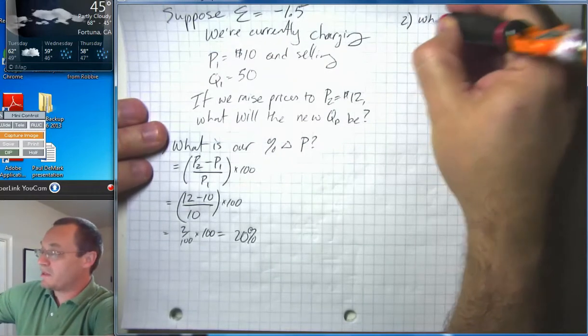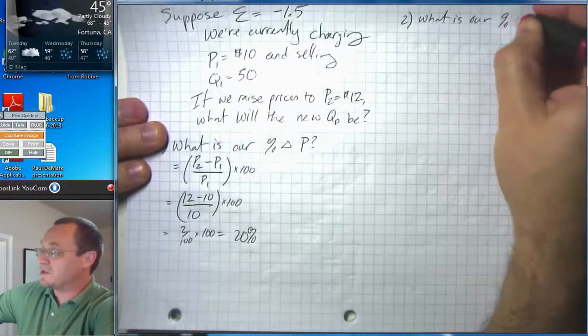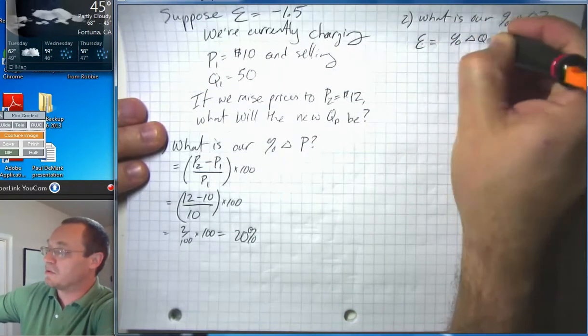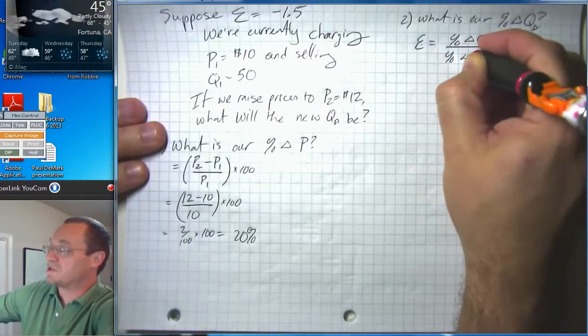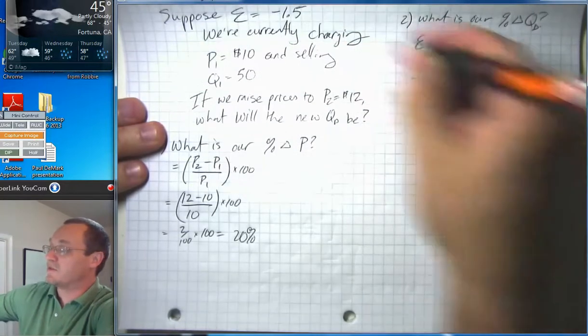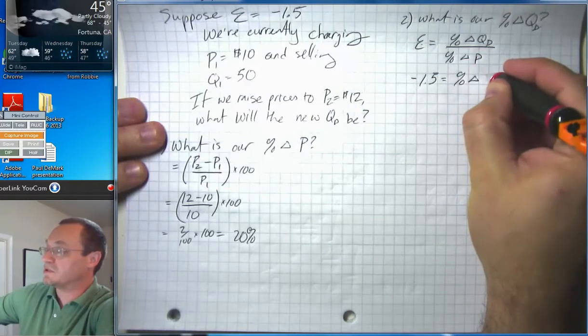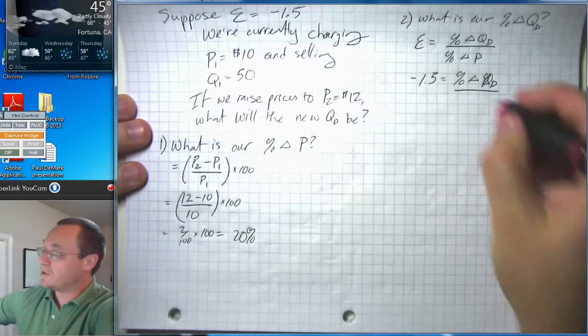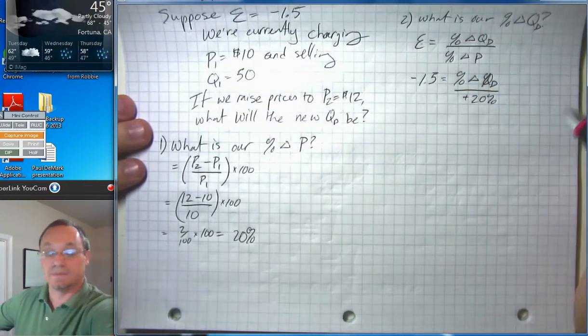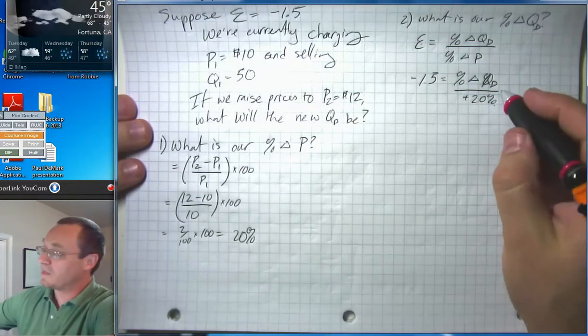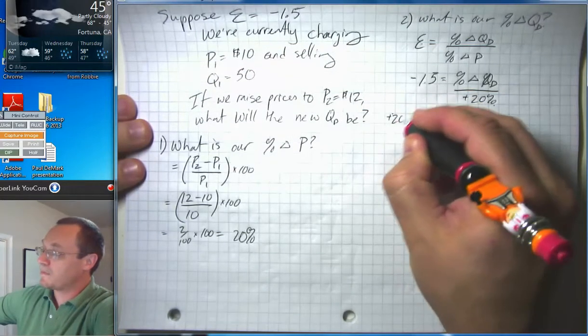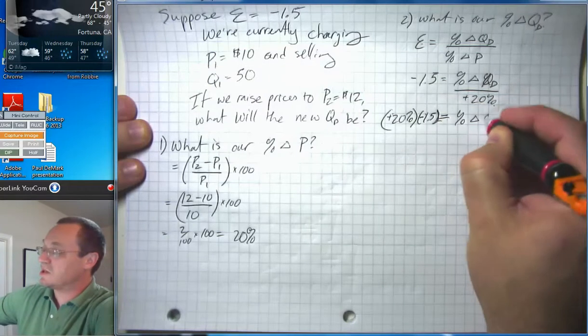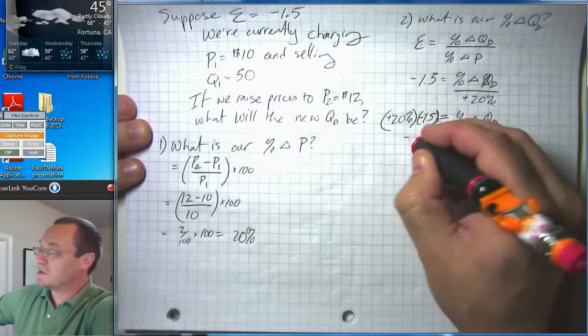So what is our percent change in Q? Well, here we want to go back to the fact that we know elasticity equals percent change in Q over percent change in price. We know elasticity is negative 1.5. We don't know percentage change in quantity demanded—that's what we're trying to solve for here. But we do know percent change in price now. We know percent change in price is positive 20%. So we're going to multiply both sides by positive 20%, and we will get that percent change in quantity demanded equals negative 30%.